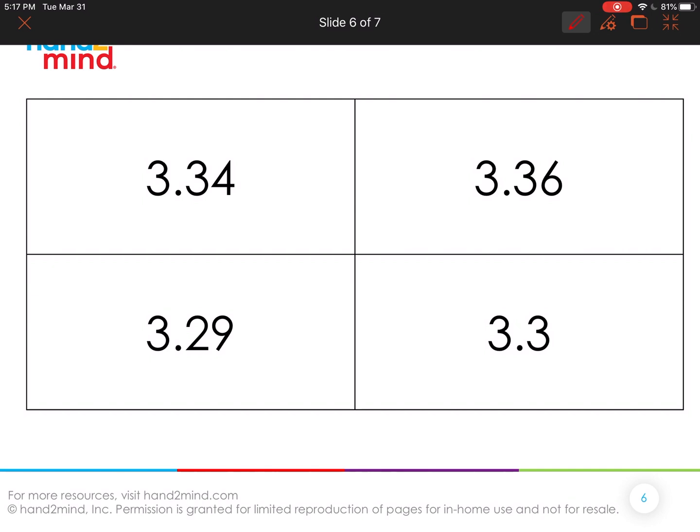I wonder how many of you said three and three tenths doesn't belong? And you said that three and three tenths didn't belong because it's only two digits. It has three and three tenths. Everything else goes into the hundredths, right? Everything else goes into the hundredths. So that may be a reason why that doesn't belong.